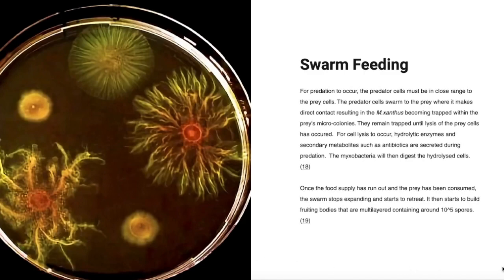For predation to occur, the cells must be in close range to the prey cells. The swarm releases hydrolytic enzymes and secretes secondary metabolites that allows the process of prey cell lysis to occur. After this process, myxobacteria digest the hydrolyzed cells.